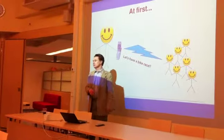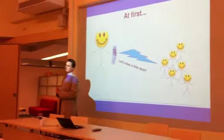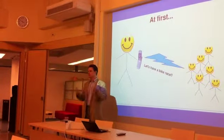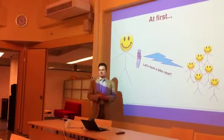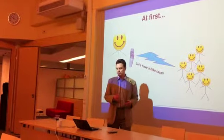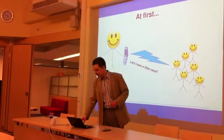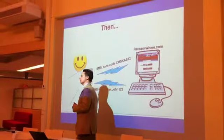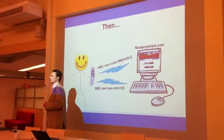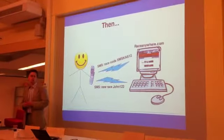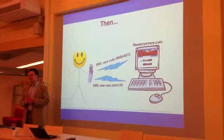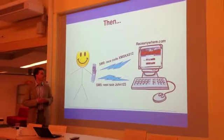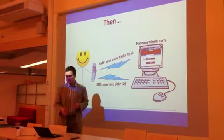First, he goes out and gets in touch with other people that he wants to race with. They set up a date and time using Facebook, Twitter, or whatever kind of media they like. Then, at the race site, John sends a text message to our service and our service sends a unique code back to John as an SMS message.